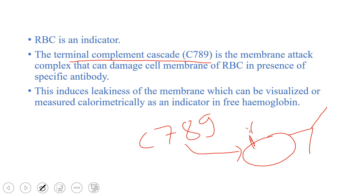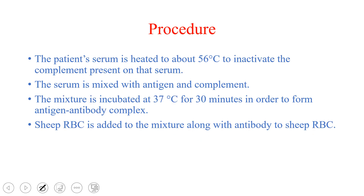This lysis induces leakiness that can be visualized by a colorimeter. The first step of the procedure is that the patient serum is heated to 56 degrees centigrade. This is done to inactivate the complement proteins already present in the patient's serum, so they don't interfere with the test.